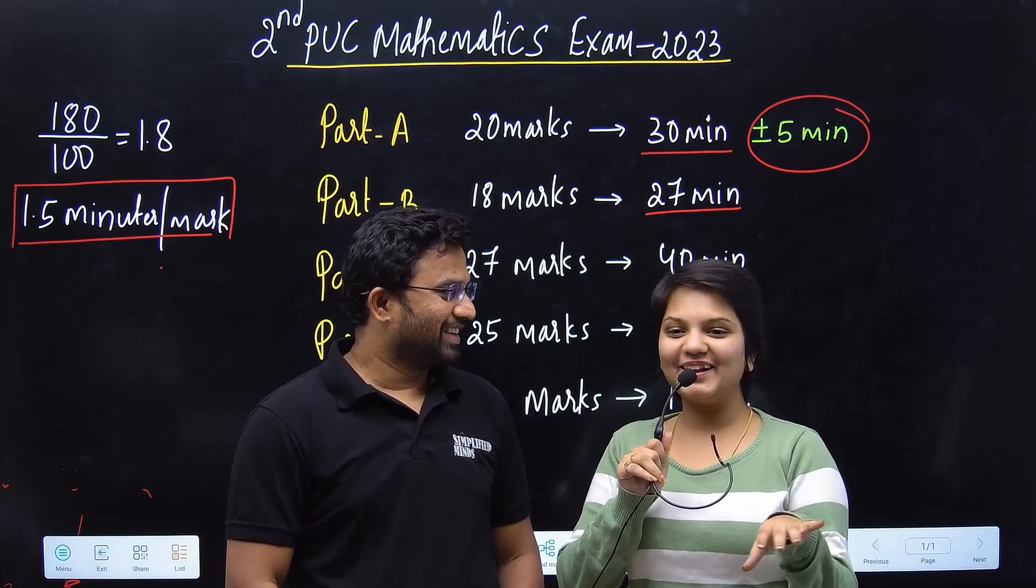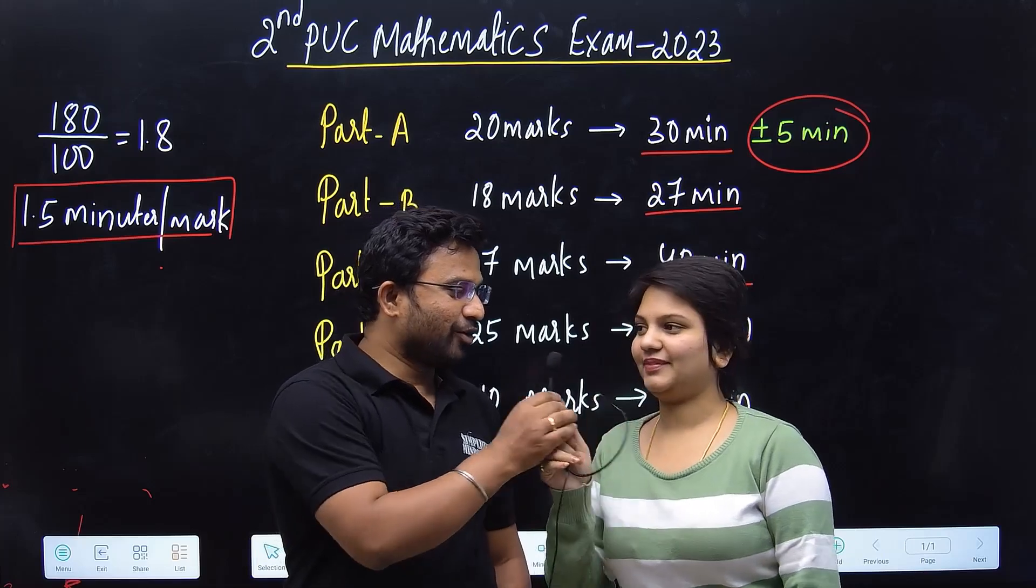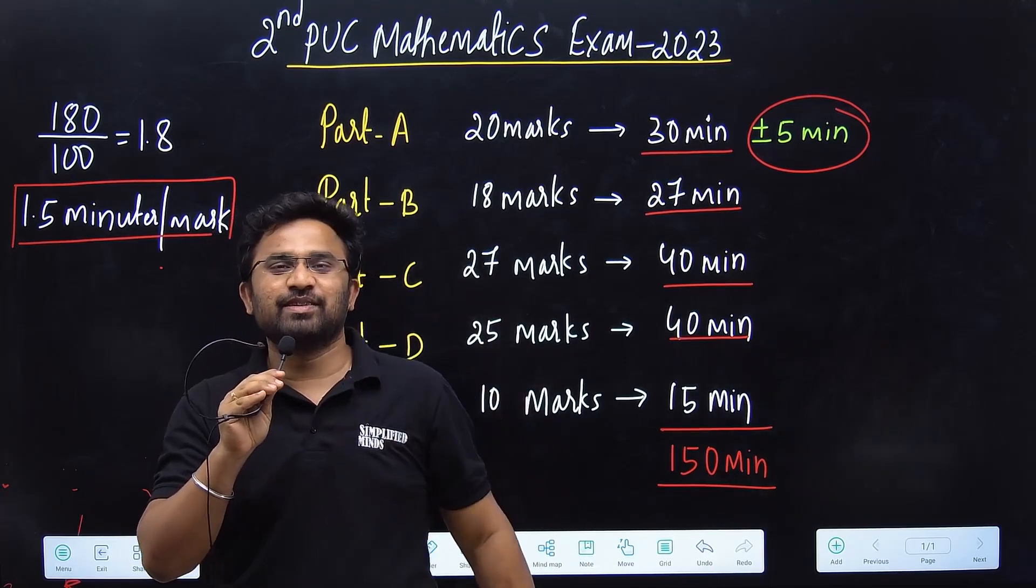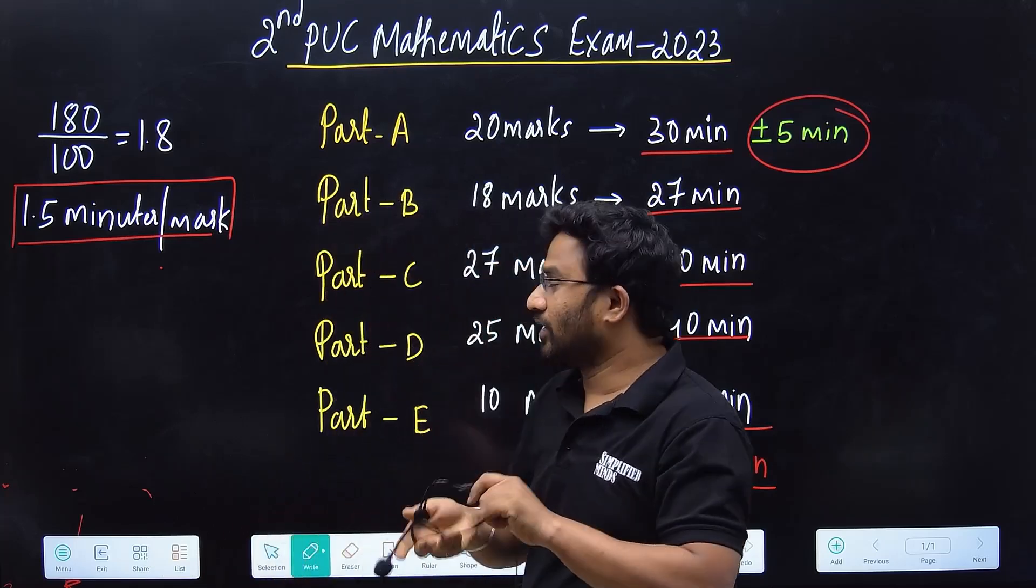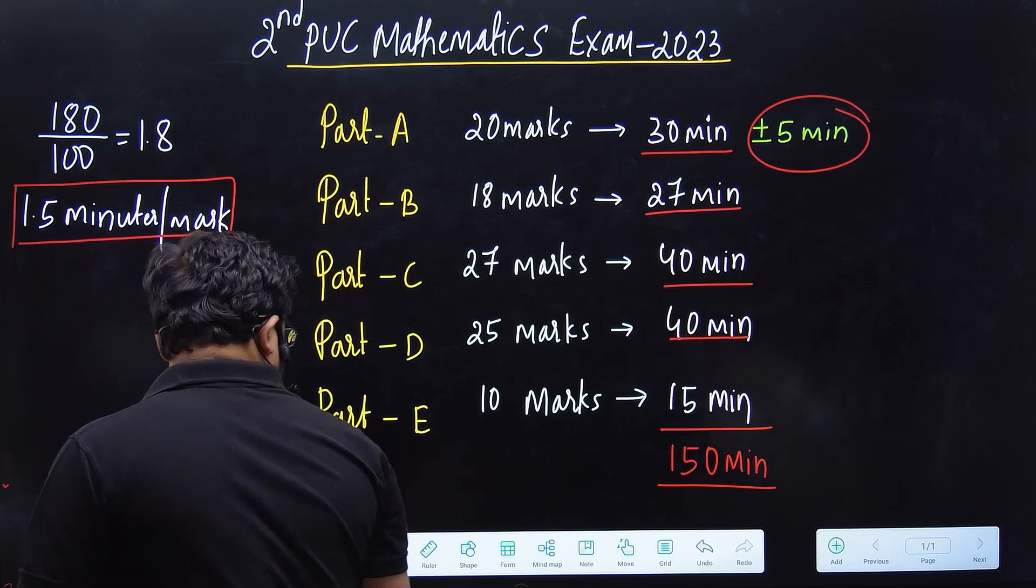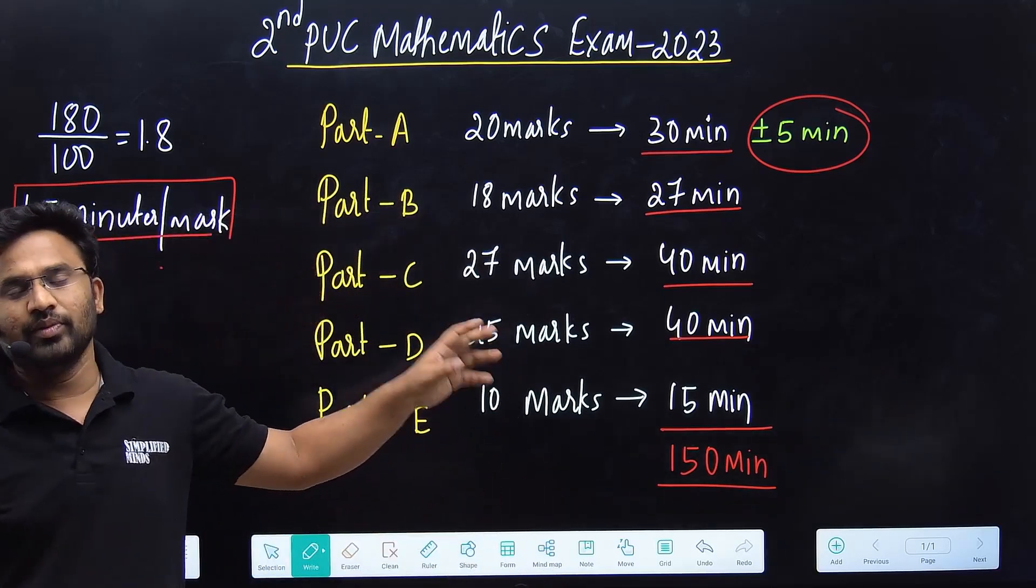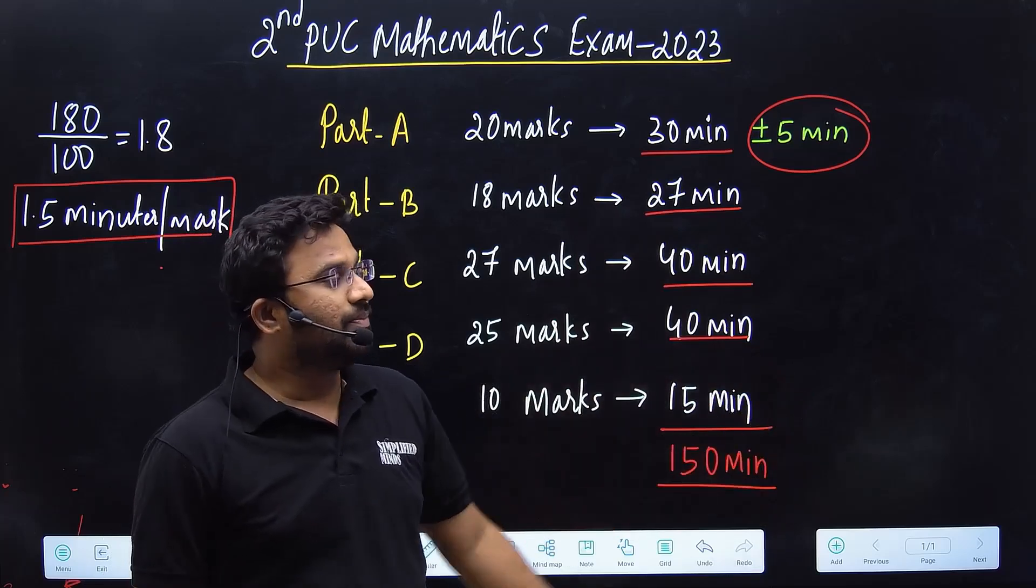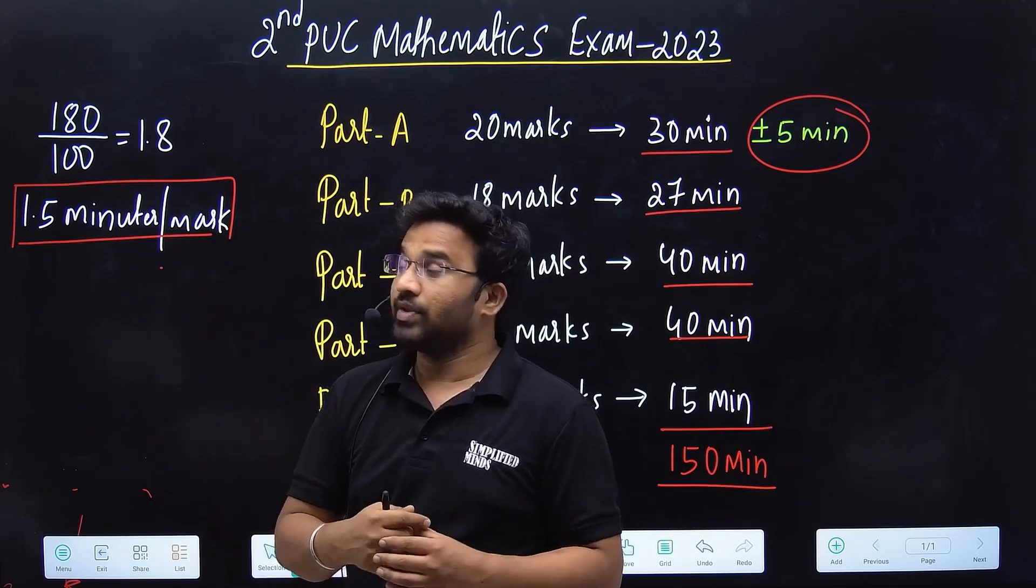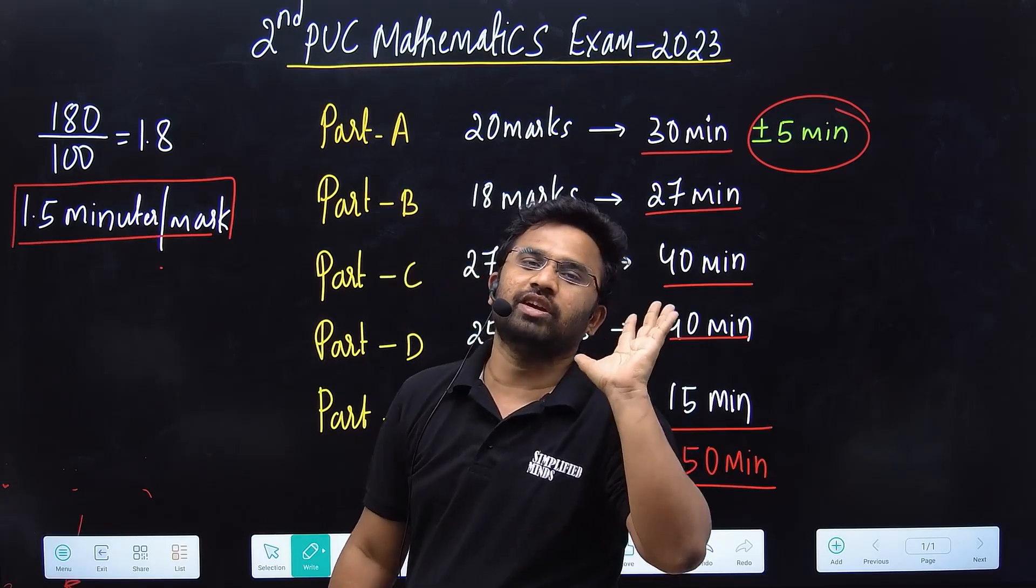I wish you all the very best. I'm handing over everything now. Let's come to the topic. Time management is very, very important in this exam. You get 180 minutes - that's 3 hours - plus 15 minutes reading time. 180 divided by 100 gives 1.8, so each mark should take maximum 1.5 minutes. If you calculate 1.5 minutes per mark for all sections, Part A might take 30 minutes, but if you calculate carefully, you can utilize that time elsewhere - for Part B, Part C, Part D.